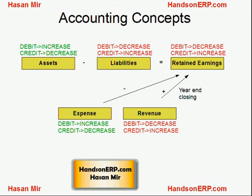When you debit an asset account, you are basically increasing that asset's accounting value. If you enter a journal where you debit an asset — for example, a vehicle account debit and cash credit — that means the value of vehicles in the company is increasing and your cash is decreasing. This is also true for expenses: if you debit an expense, that means your expenses are increasing in value.